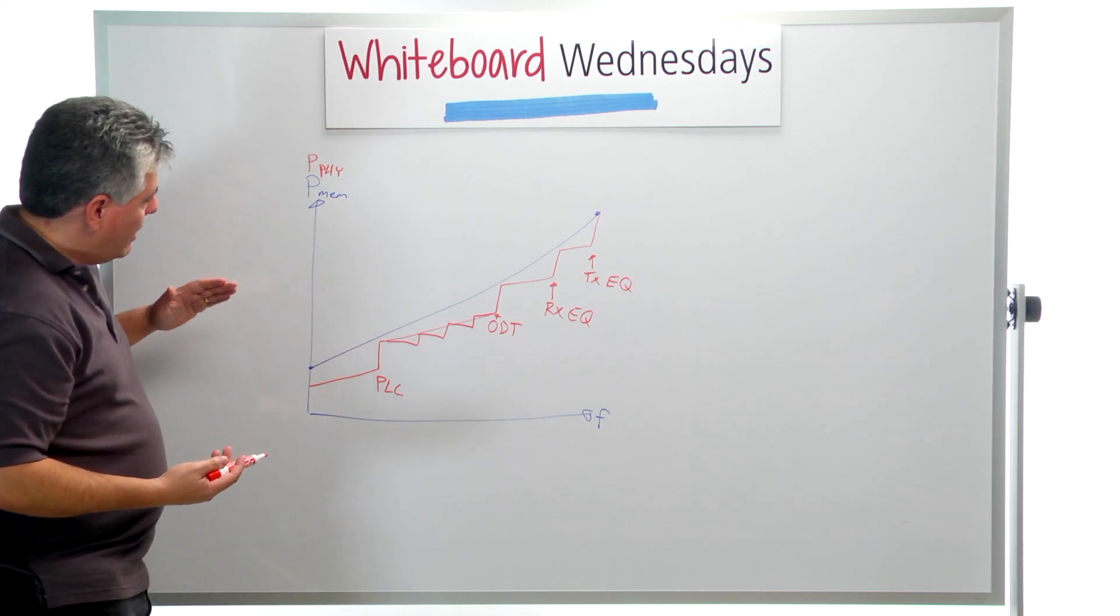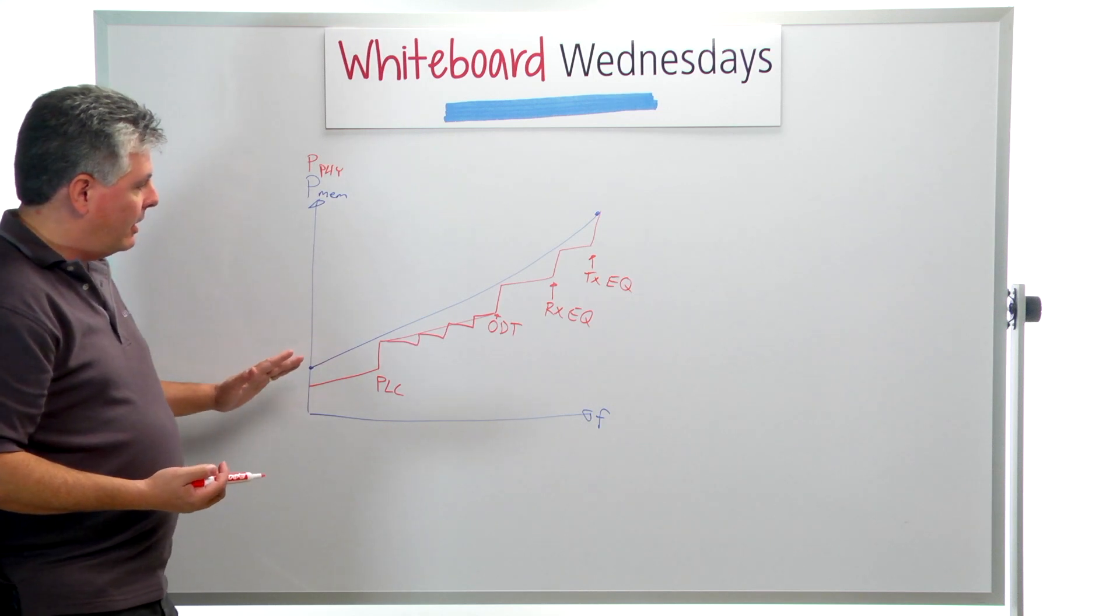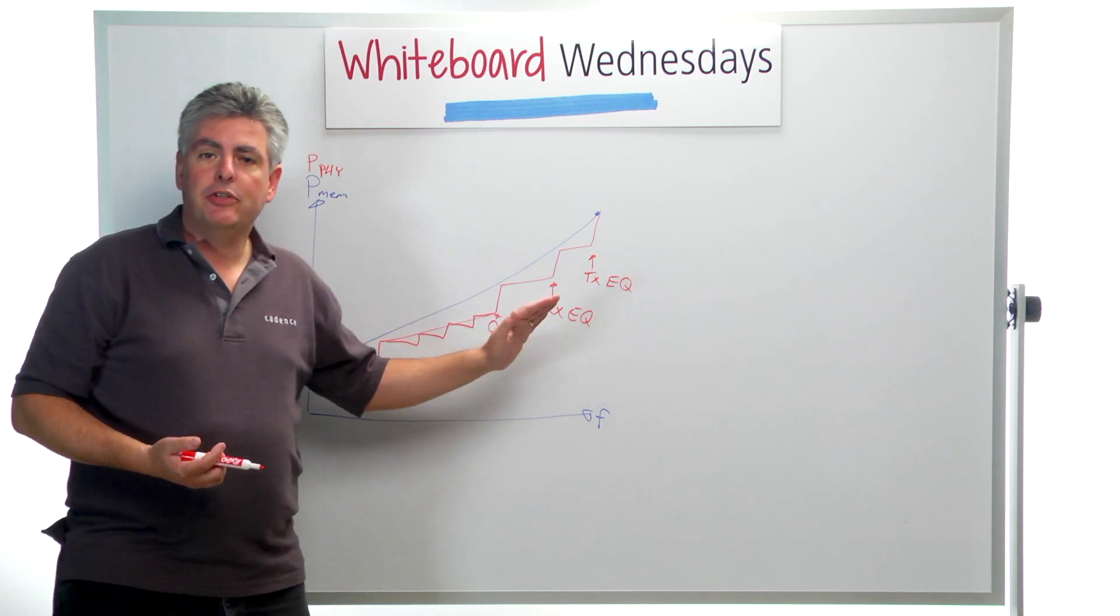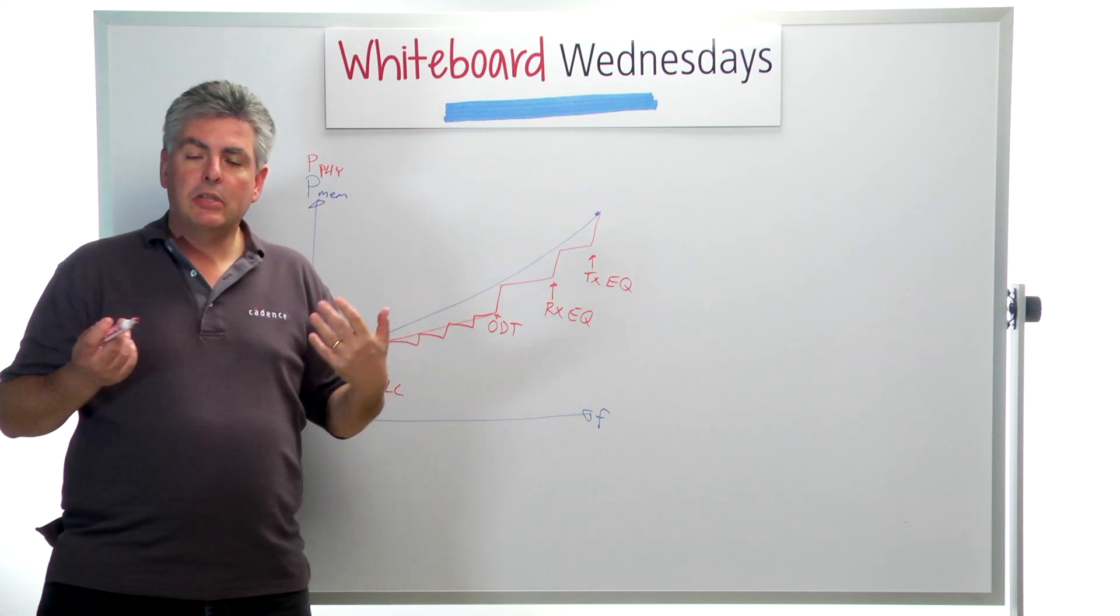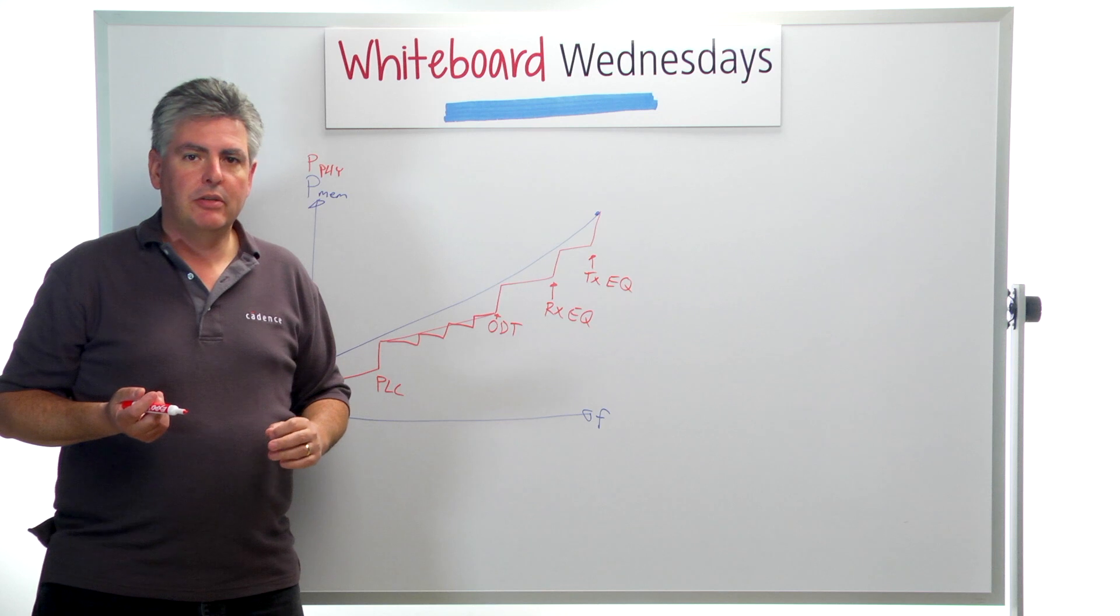So the PHY power is, if you use the power features within the PHY, the PHY power is kind of a non-linear thing. And so when selecting an intermediate frequency to work at, if you choose to select an intermediate frequency,